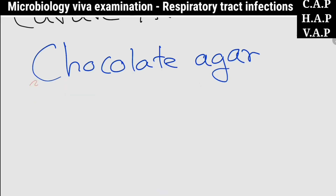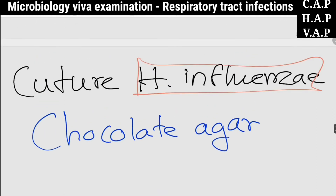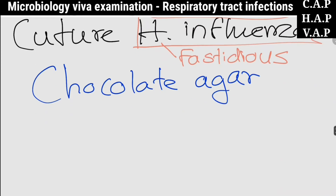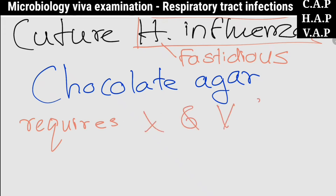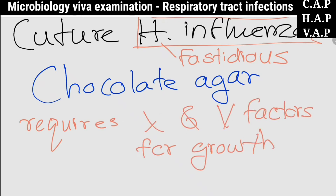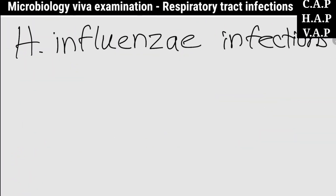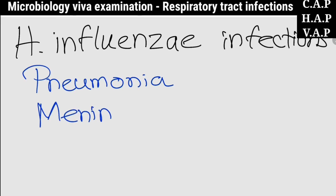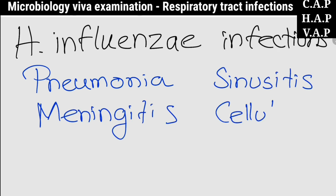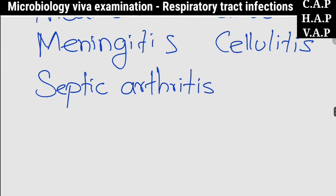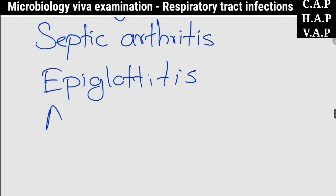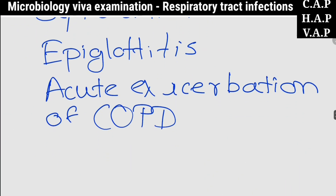The preferred culture medium to culture that sample is Chocolate Agar, because Haemophilus influenzae is a fastidious organism — it requires X and V factors for growth, which are components of Chocolate Agar.